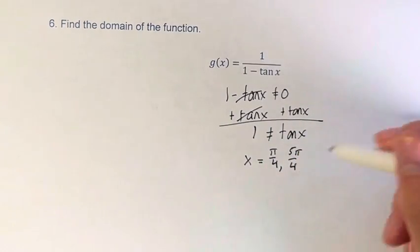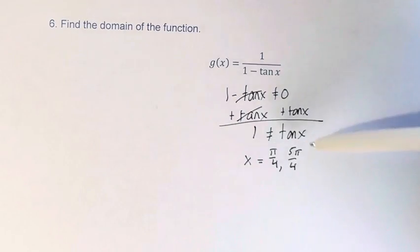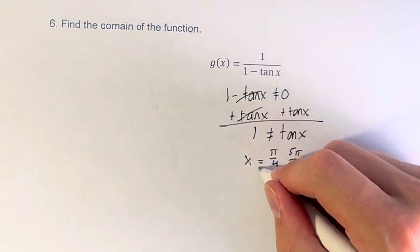These are the two values, if you're looking within the 0 to 2 pi range, in which tangent of x is equal to 1. So these are values that cannot occur.